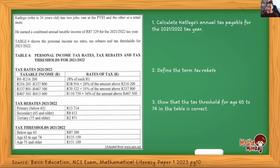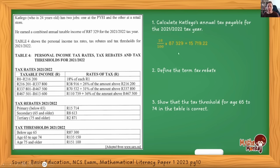Now let's answer the three questions — this is actually taken from the NSC exam from 2023. Question one: calculate the annual tax payable for the 2021/2022 tax year. We always use the annual value to see which tax bracket it falls into. In this case, Katejo earns within the first tax range.